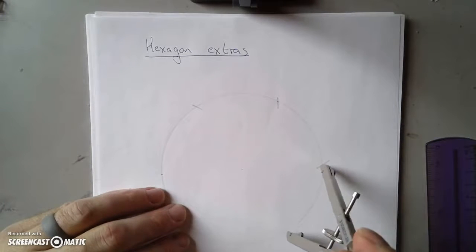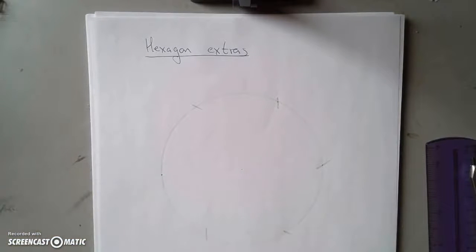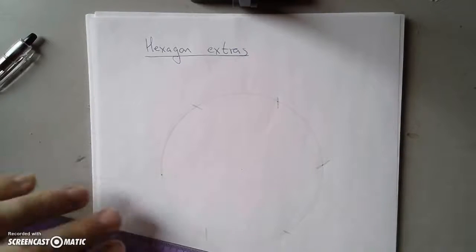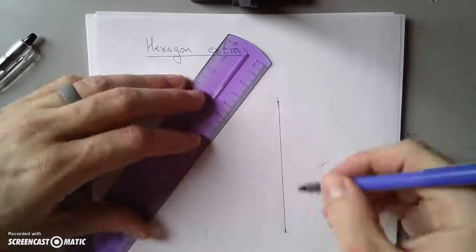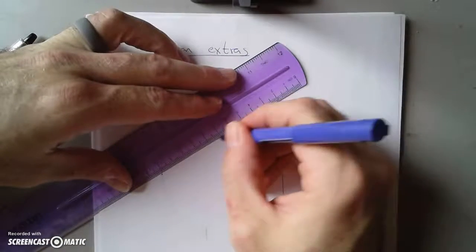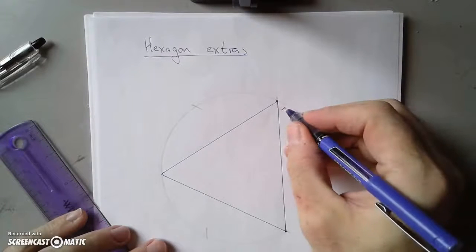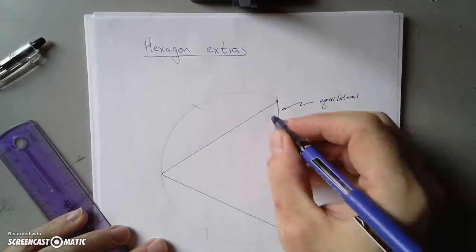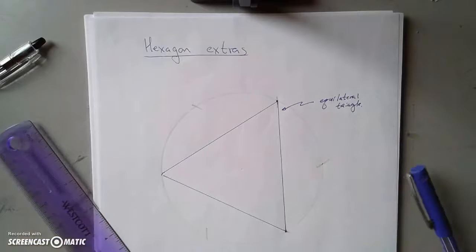One of the things I can do — I'll do these in pen — is get a triangle out of this. If you connect every other dot like this, it doesn't matter where you start, just every other dot, you'll get an equilateral triangle. So this is one way of making an equilateral triangle. It's also equiangular.